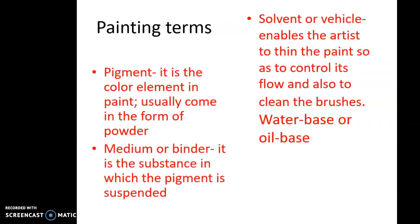Here are some painting terms you will need to know for the exam. Pigment is the color element in the paint, usually coming from some sort of paste or powder. Medium or binder is the substance in which the pigment is suspended. Solvent or vehicle enables the artist to thin down the paint to control its flow and also to clean the brushes, depending on whether it is a water-based or oil-based paint. Water would be the solvent for water-based paint; oil-based paint would use something like turpentine, thinner, or mineral spirits.